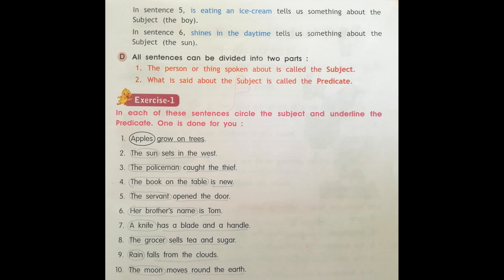Number nine: Rain falls from the clouds. Rain is the subject. Falls from the clouds is the predicate.